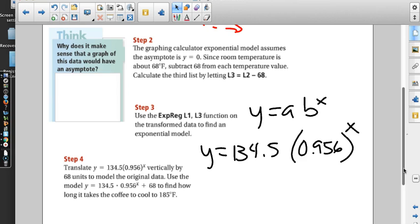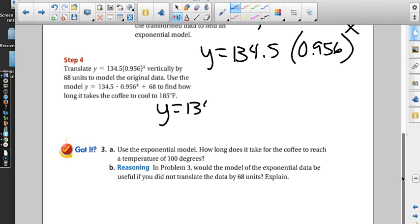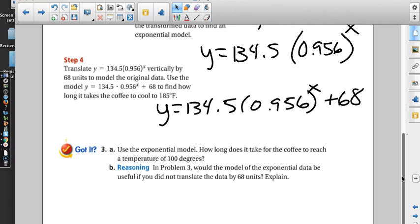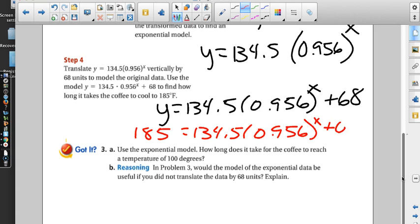Remember we had to move it to get room temperature. Translate it vertically by moving it back up 68 units. We just have to get plus 68 in the model, that's all we have to do. There's our room temperature, 68. We had to take the temperature off of the picture in order to find our exponential model and then move it back up so we could see it. Now we want to find out how long it's going to take the coffee to cool to 185. So here's what we do. I'm going to put a 185 over here.